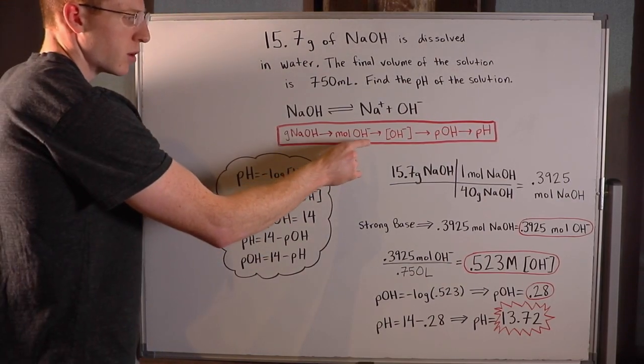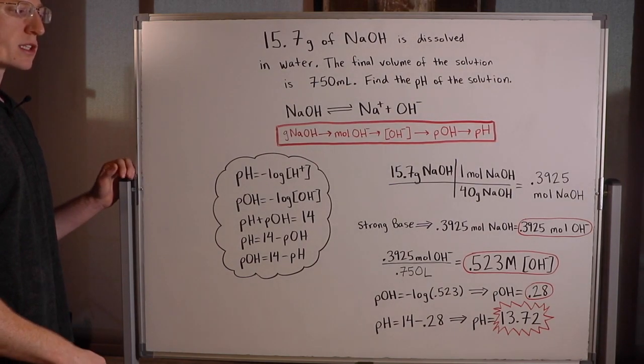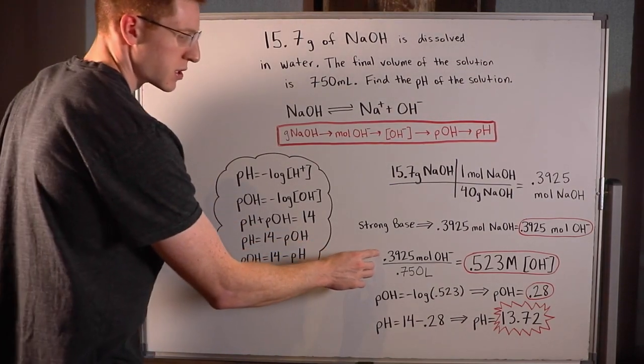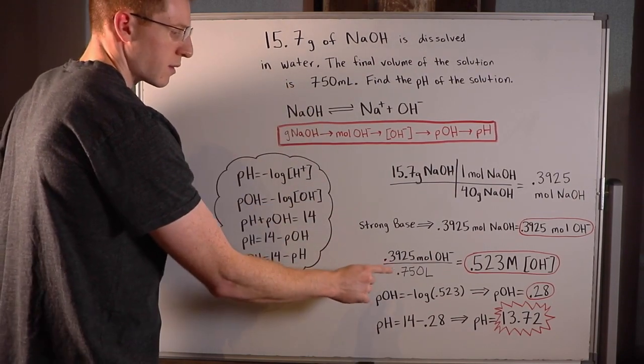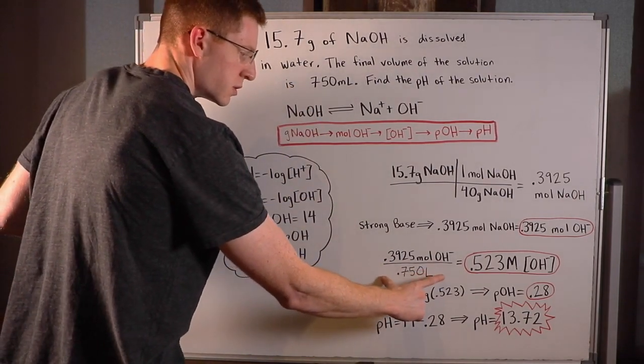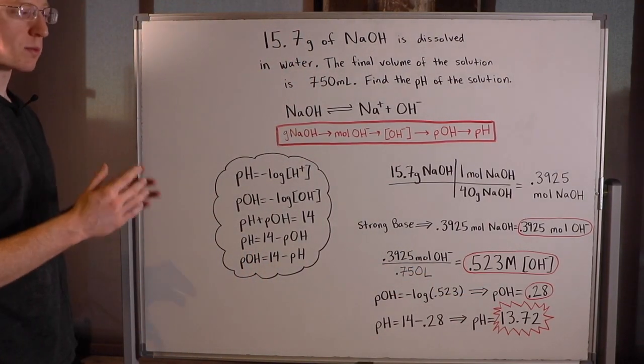So now that I've got moles of OH minus, I want to get to concentration of OH minus. And that is in units of molarity. So I know I have to divide by my total liters of solution, and that is 0.750 liters. So doing this division problem, I've got 0.523 molar OH minus concentration.